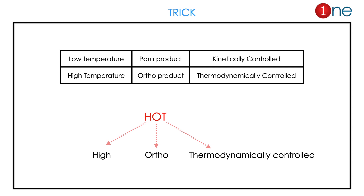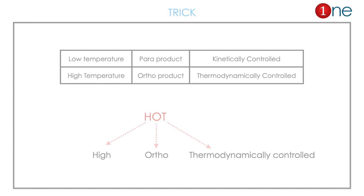At low temperature, only the para product is formed — it is kinetically controlled because of steric reasons. At high temperature, the ortho product is formed, which is thermodynamically controlled. To avoid confusion, remember the acronym HEART: High temperature, ortho, thermodynamically controlled.